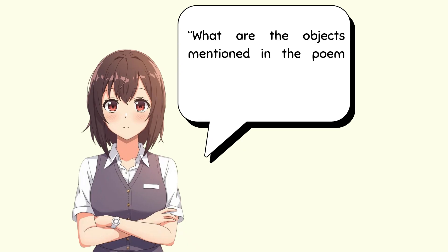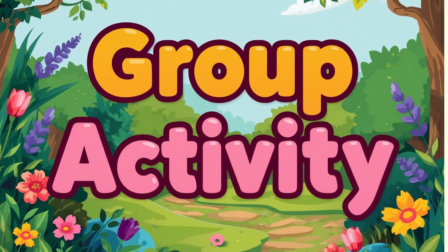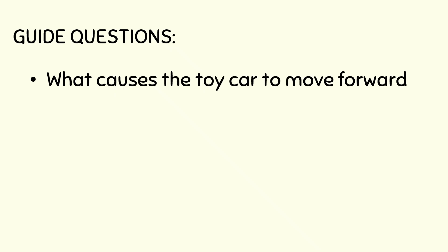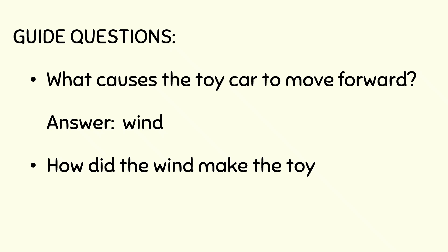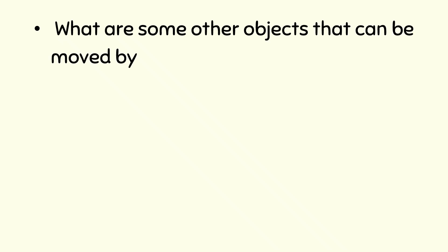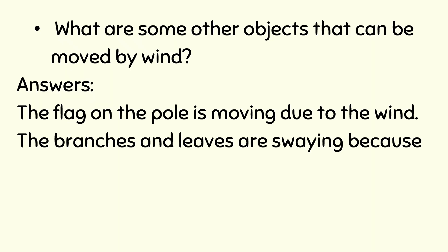What are the objects mentioned in the poem that move when the wind passes by? Let's proceed to the book. Here are the guide questions. What pushes the toy car to move? The answer is wind. How did the wind make the toy car move? The answer is the wind pushes the car. What are some other objects that can be moved by wind? The branches and leaves are swaying because of the wind.